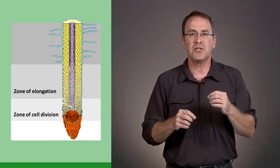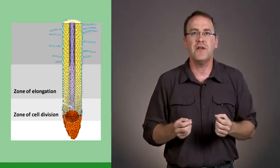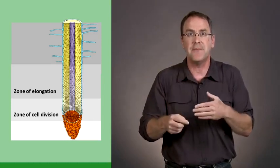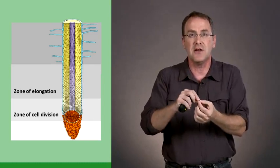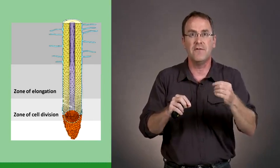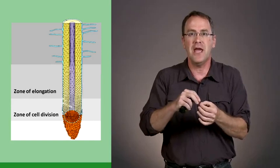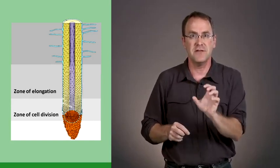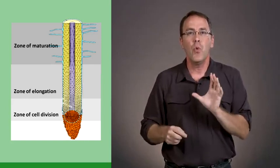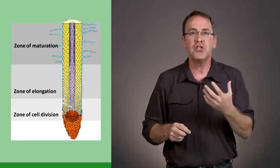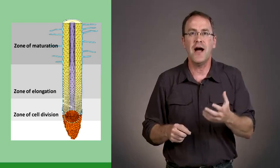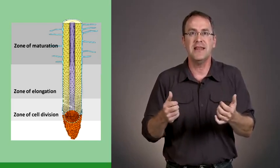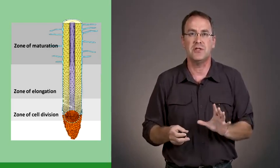Above this, we have an area called the zone of elongation. This is where the cells are increasing in size up to 10 to 20 times difference in cell size from the area of cell division up to the area of elongation. So first the cells divide, then they elongate, and once they've elongated, they can mature and assume their final role. For example, the epidermal cells can then develop root hairs. This is the zone of maturation.